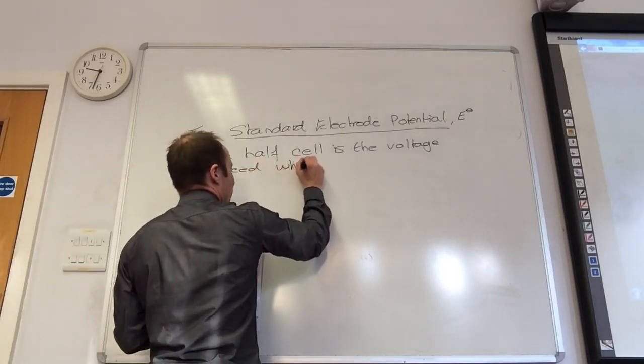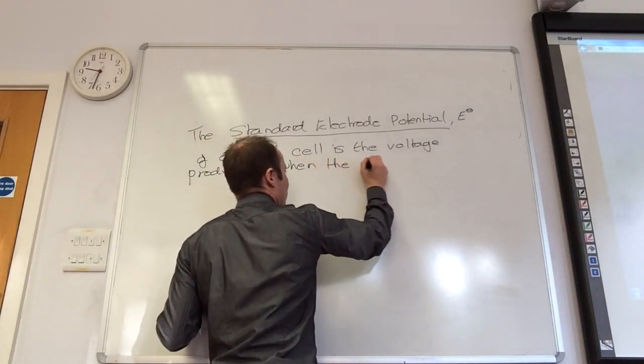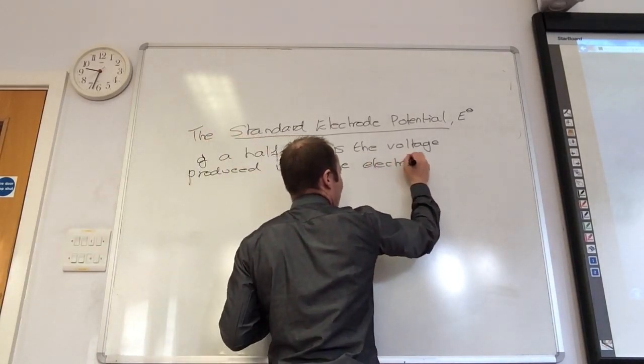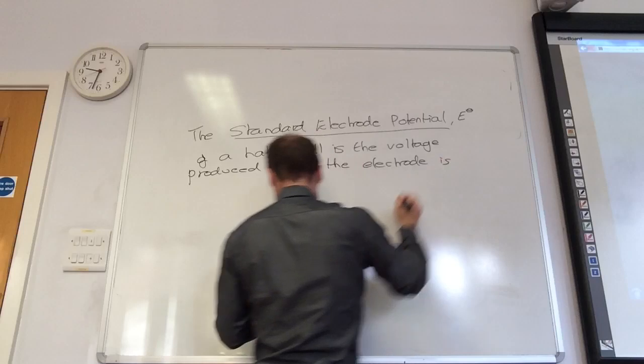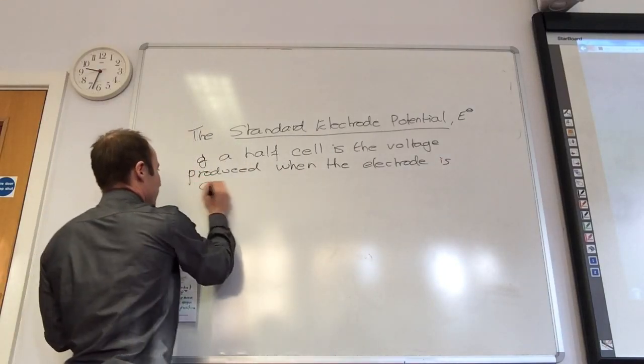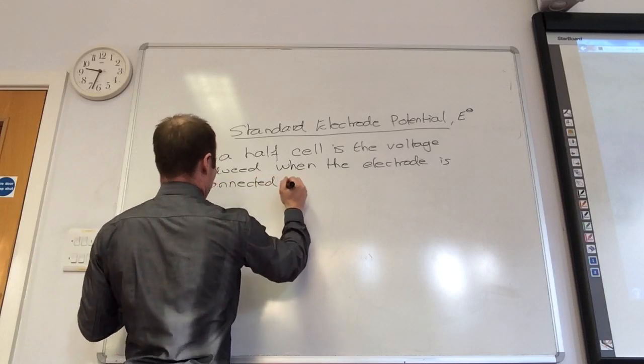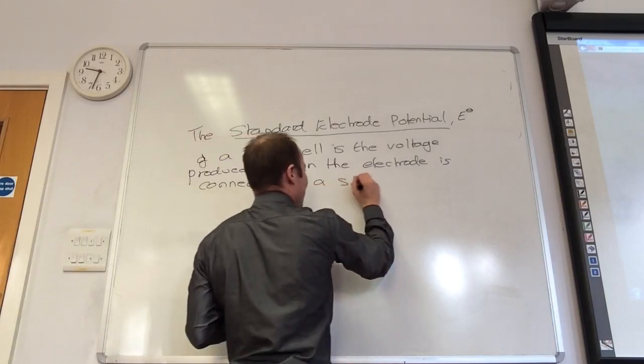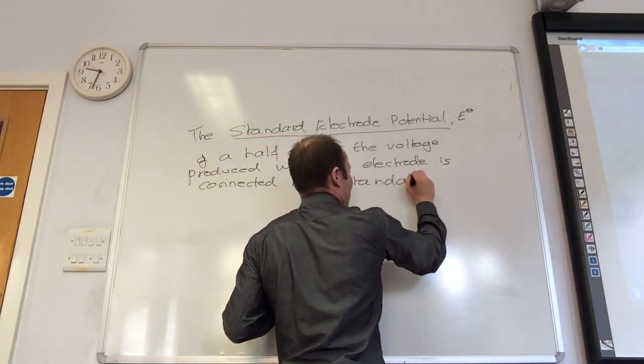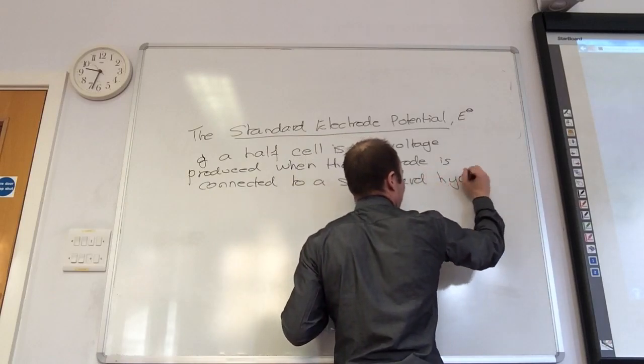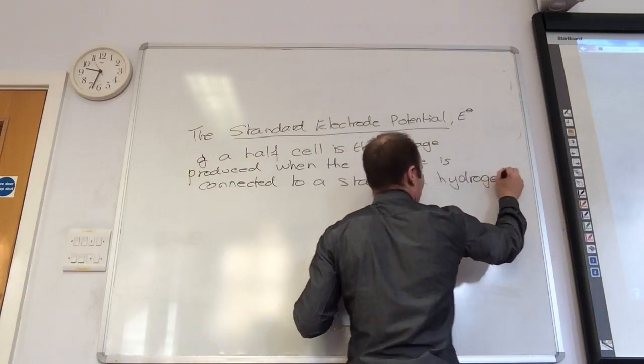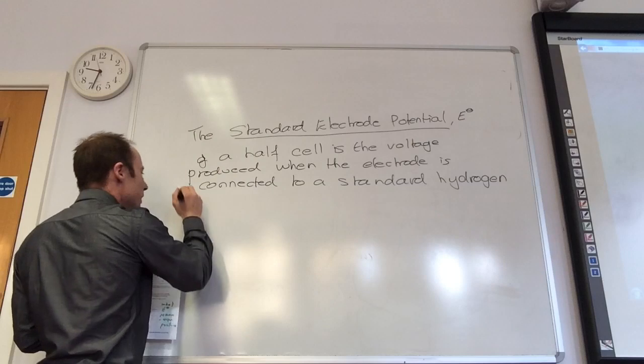A half cell is the voltage produced when the electrode is connected to a standard hydrogen electrode.